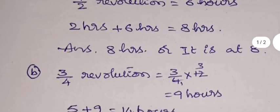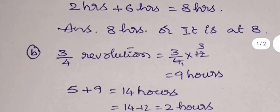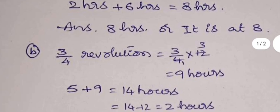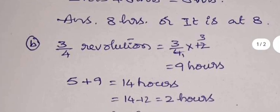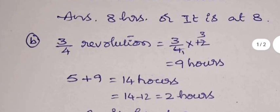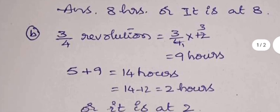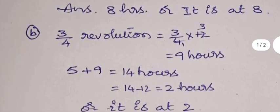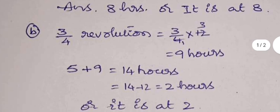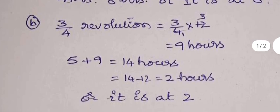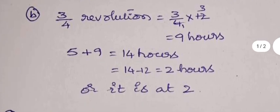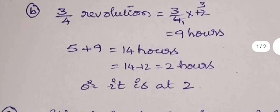3/4 of a revolution means 3/4 into 12, that is 9 hours. Initially the hour hand is at 5. 5 plus 9 is 14, but we have a 12 hour clock, so 14 minus 12 you can subtract. So then you get 12 to 2 hours, so that means at 2.